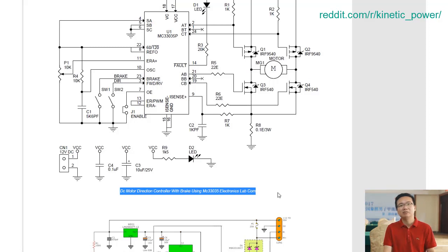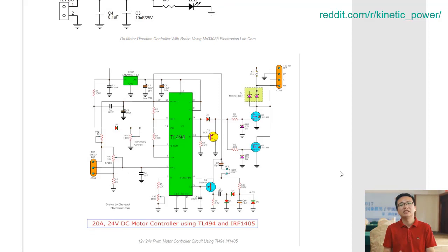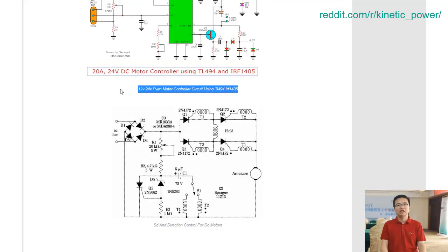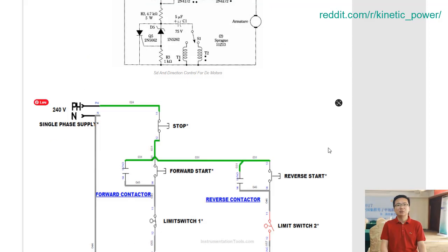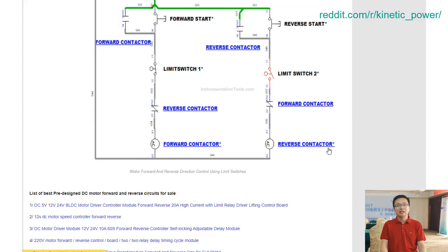With this comprehensive set of features, it is easy to see why this DC motor forward and reverse circuit has become such a popular choice in modern machinery systems.